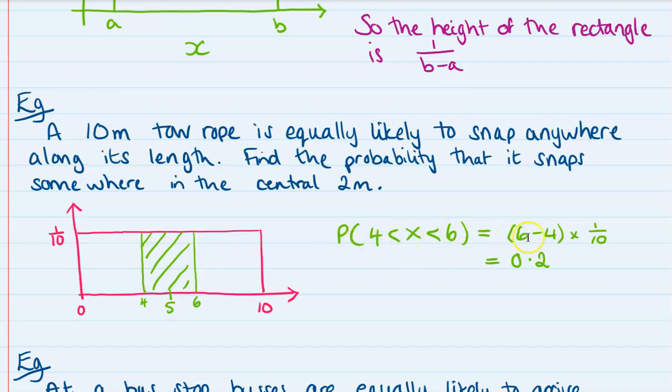So then the probability that x is between four and six will be the length of that base times the height, so that's two times one tenth, which equals 0.2.